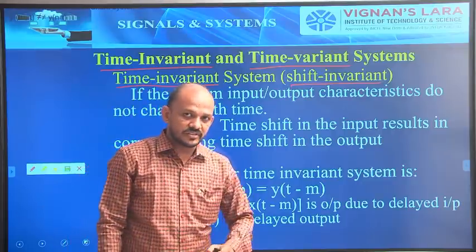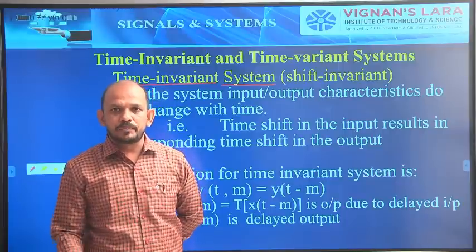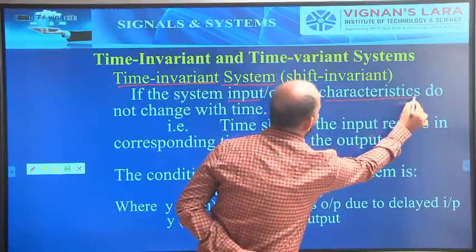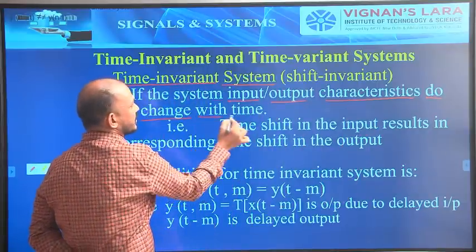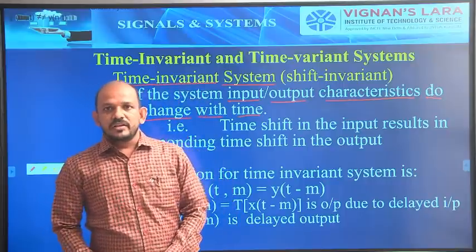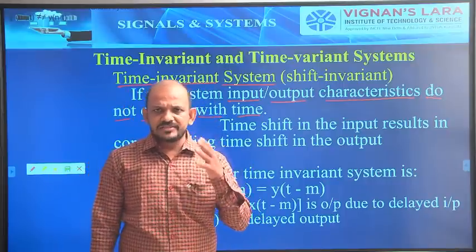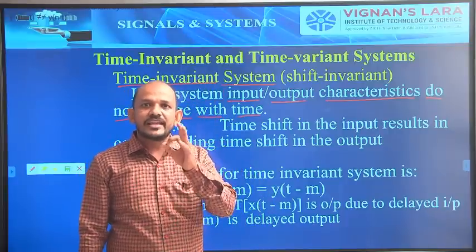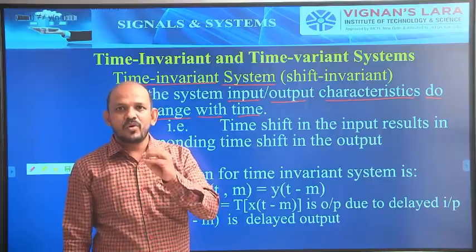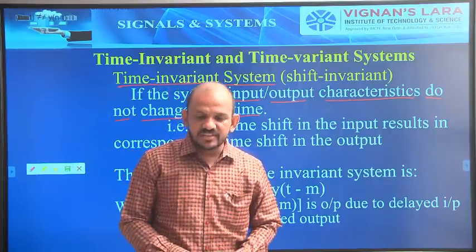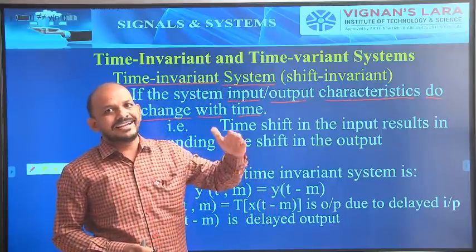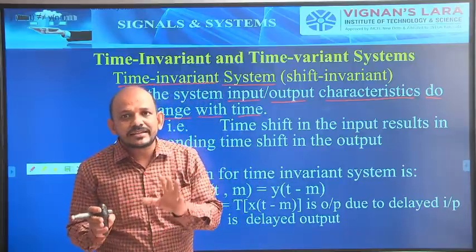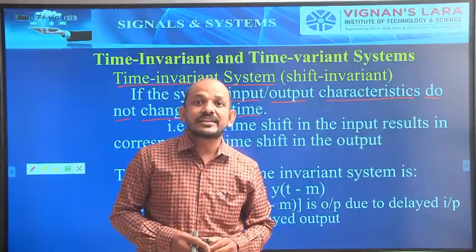What is a time invariant system? If the system input-output characteristics do not change with time — that is the simple logic. If there is any change in the input, that same change is reflected at the output. Then those types of systems are called time invariant systems.